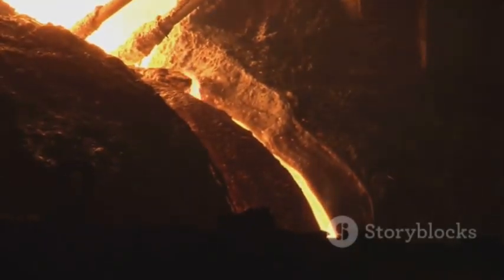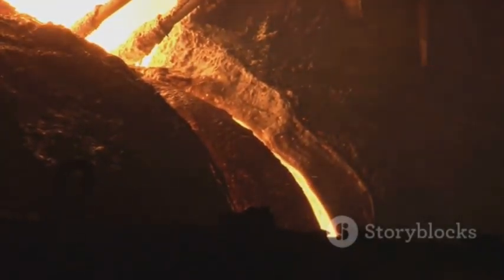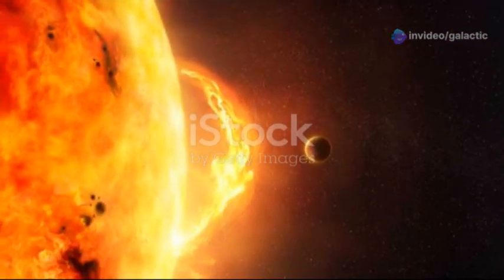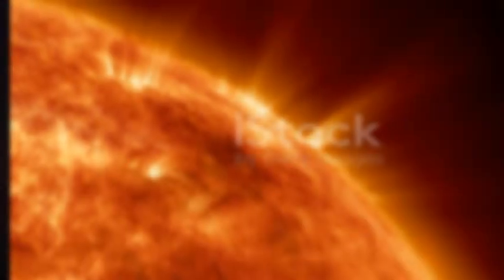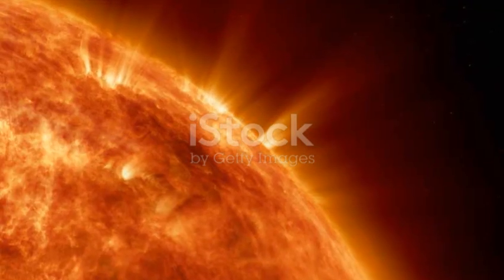Iron is the end of the line for stellar fusion, as fusing iron requires more energy than it releases. With the core no longer able to generate the outward pressure to support the star's immense weight, gravity takes over. The core collapses in on itself with incredible speed, reaching phenomenal temperatures and densities. This collapse triggers a shockwave that propagates outward through the star's layers, ripping it apart in a cataclysmic explosion, a supernova.